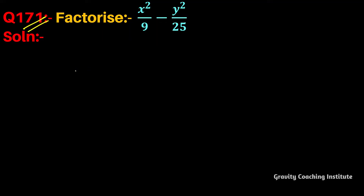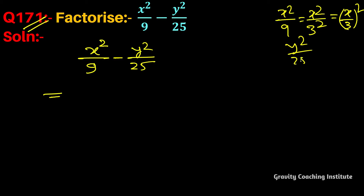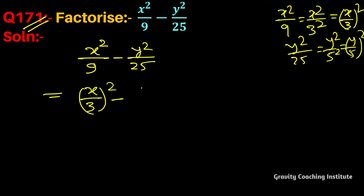Question number 171: factorize x square upon 9 minus y square upon 25. So x square upon 9 equals x upon 3 whole square, and y square upon 25 equals y upon 5 whole square. So we have x upon 3 whole square minus y upon 5 whole square, and then we will use the identity a square minus b square.